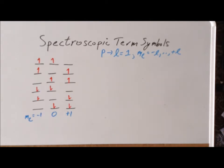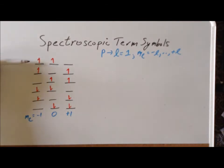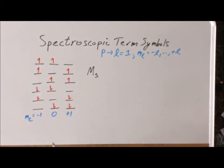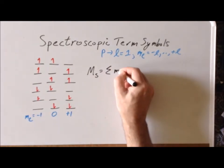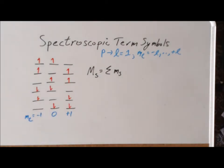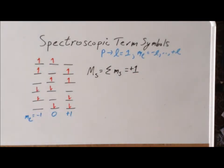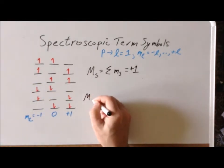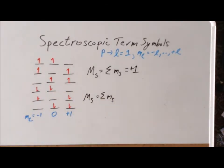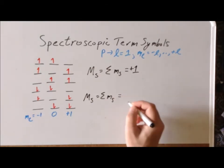One convenient result: since the first three microstates have two up electrons, each contributing plus one-half, the overall big M sub S is plus one for all three cases. For the bottom three microstates with two down electrons, each contributing minus one-half, the overall big M sub S value is minus one for all three.